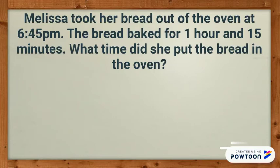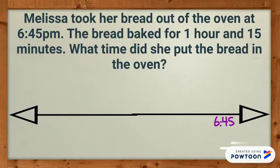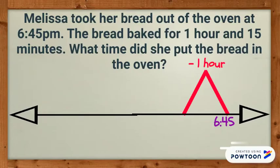First, make a number line. Since you know the ending time, record the ending time on the right side of the number line. Now I will subtract the largest amount of time first. The bread baked for 1 hour, so I am going to make and label 1 hour mountain. 6:45 minus 1 hour is 5:45.